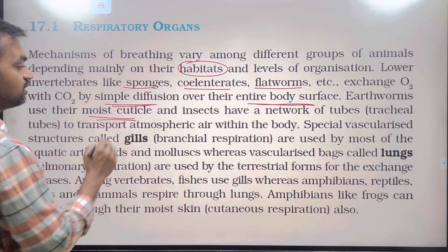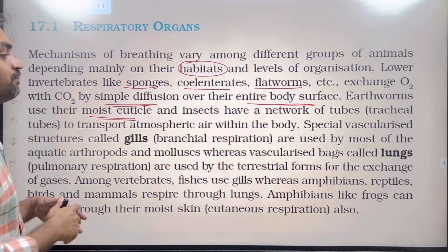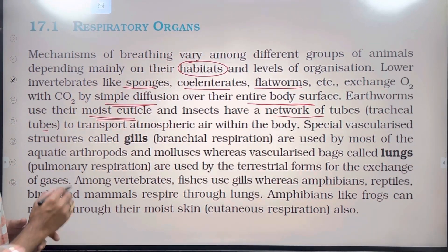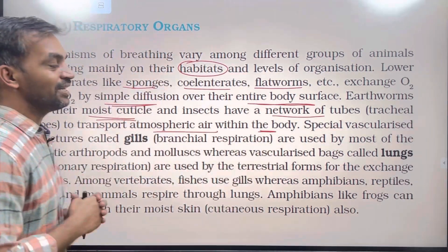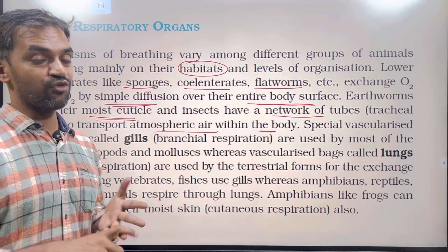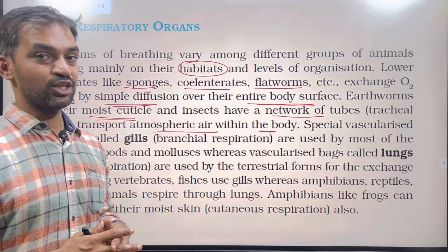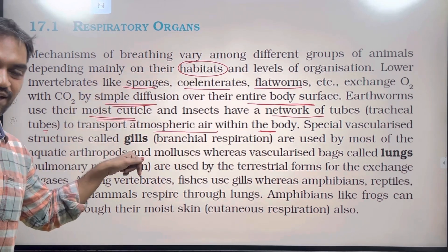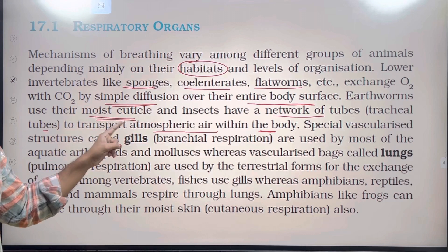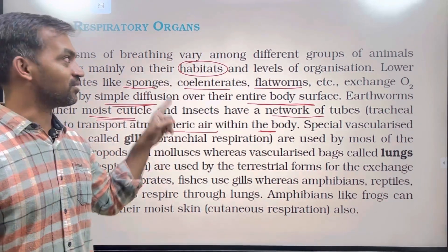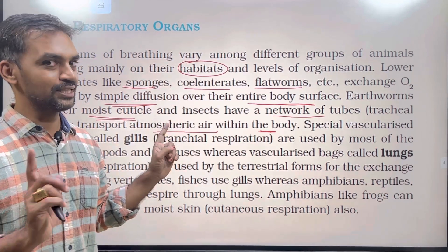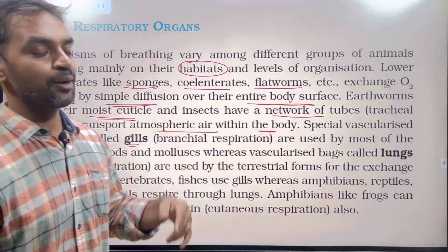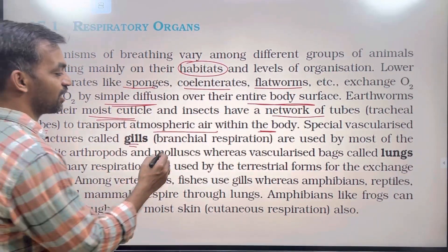Earthworms use their moist cuticle for respiration — exchange of oxygen and carbon dioxide. Special vascularized structures called gills are used for branchial respiration in aquatic organisms.